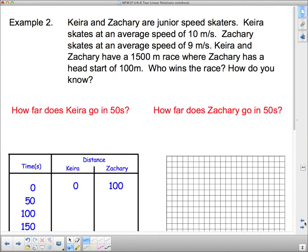Now, let's have a look at a different situation that involves two linear equations. This is taken out of your textbook, although I've changed the names. Example two, Kira and Zachary are junior speed skaters. Kira skates at an average speed of 10 meters per second, and Zachary skates at an average speed of 9 meters per second. Kira and Zachary have a 1,500-meter race where Zachary has a head start of 100 meters. Who wins the race, and how do you know?